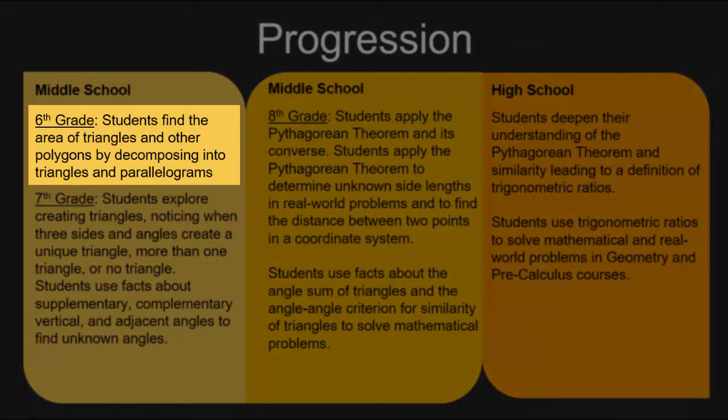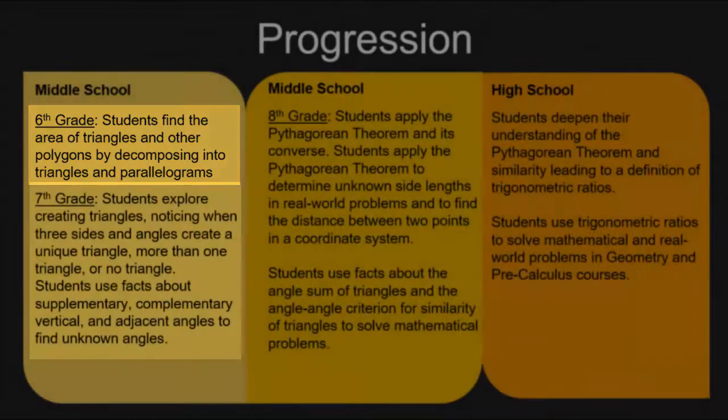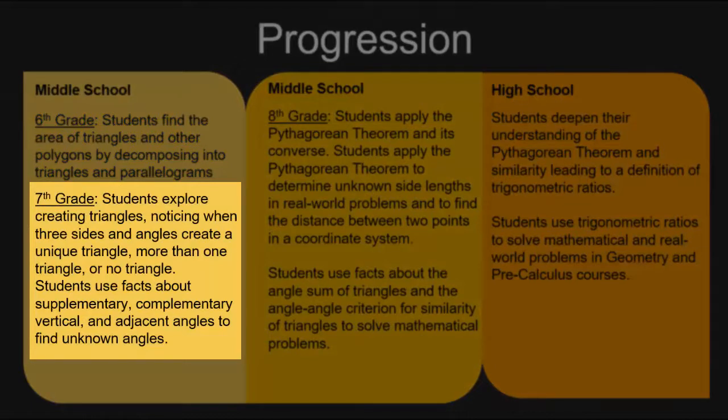In sixth grade, students find the area of triangles and other polygons by decomposing them into triangles and parallelograms. In seventh grade, students explore creating triangles, noticing when three sides and angles create a unique triangle, more than one triangle, or no triangle. Students use facts about supplementary, complementary, vertical, and adjacent angles to find unknown angles.